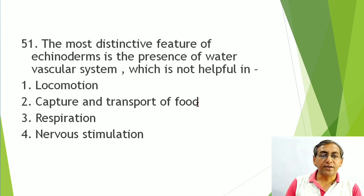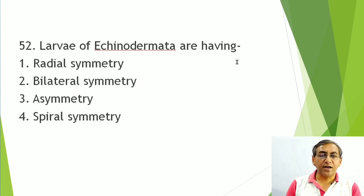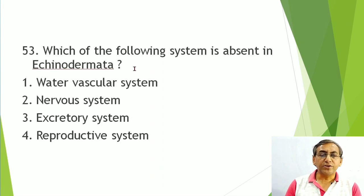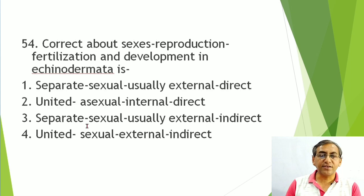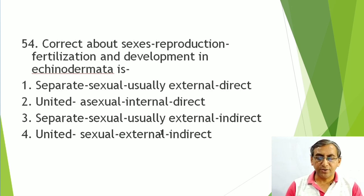Most distinctive feature of Echinodermata: presence of the water vascular system — a direct question from NCERT. It is helpful in locomotion, capture and transport of food, and respiration. It is NOT helpful in nervous stimulation. Larvae of echinodermates have bilateral symmetry; adult Echinodermata have radial symmetry. The excretory system is absent in Echinodermata.